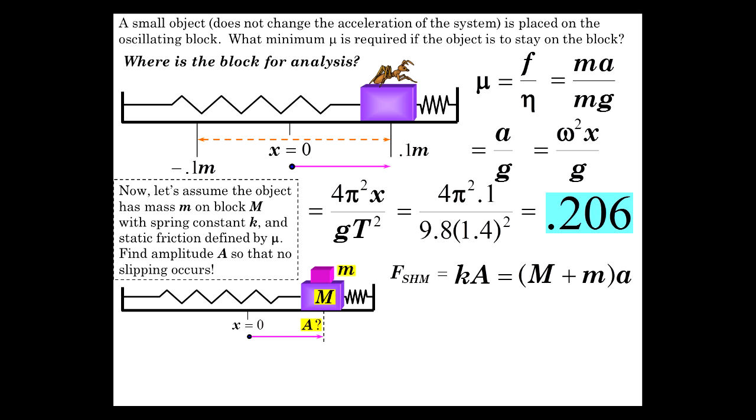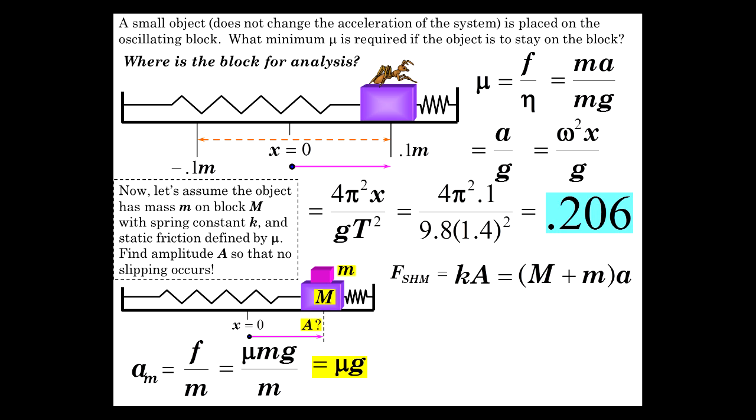So we're ready to write the answer. A is all this divided by k. So the only thing we have to do is solve for the acceleration, which is friction over mass, sum of F over m, which is mu mg over m, which is mu g. And finally, we get our wonderful answer, m plus M mu g over k.